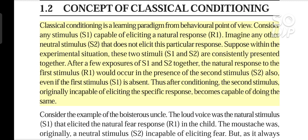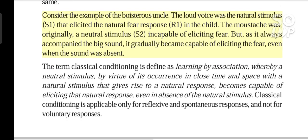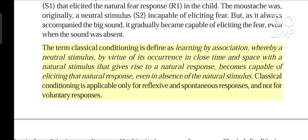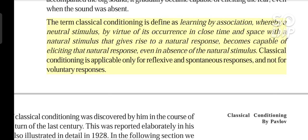Thus after conditioning, the second stimulus, originally incapable of eliciting the specific response, becomes capable of doing the same. Consider the example of the boisterous uncle. The loud voice was the natural stimulus, S1, that elicited the natural fear response, R1, in the child. The mustache was, originally, a neutral stimulus, S2, incapable of eliciting fear. But as it always accompanied the big sound, it gradually became capable of eliciting the fear, even when the sound was absent. Classical conditioning is defined as learning by association, whereby a neutral stimulus, by virtue of its occurrence in close time and space with a natural stimulus that gives rise to a natural response, becomes capable of eliciting that natural response, even in absence of the natural stimulus.